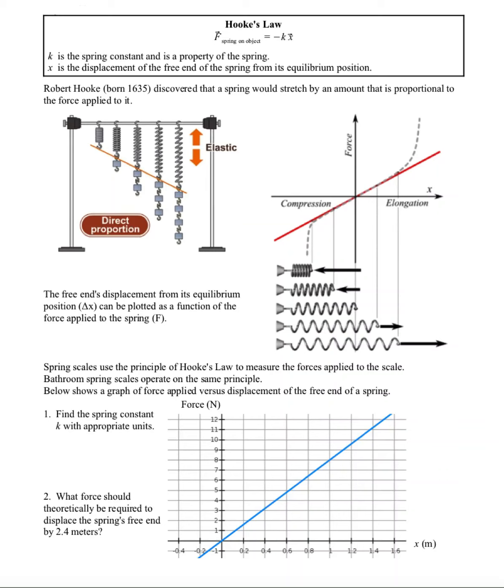Hooke's law describes the behavior of springs under compression or stretching. The law can be described mathematically by the formula F equals negative K times X. K is a spring constant, which is a property of the spring itself. X is the displacement of the free end of the spring from its equilibrium position.